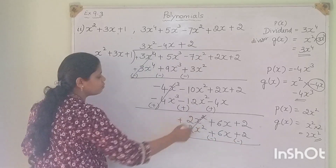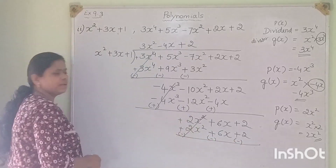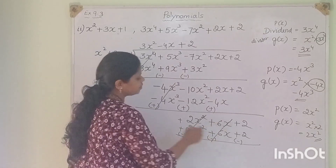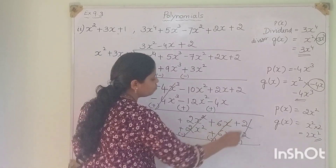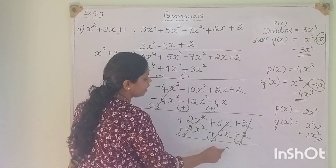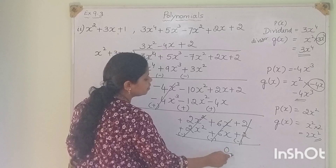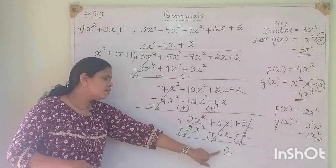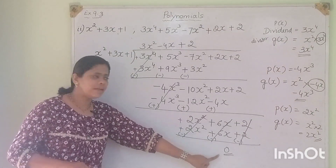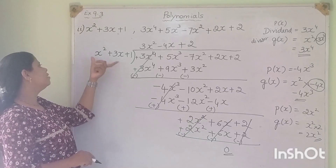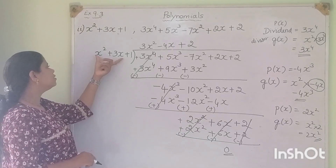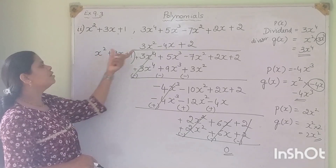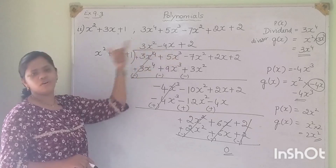We change the signs and subtract. Plus 2x squared minus 2x squared cancels. Plus 6x minus 6x cancels. Plus 2 minus 2 cancels. The remainder is 0.